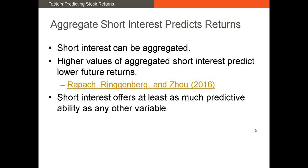There are two additional factors that have been found to predict returns. The first is aggregate short interest — the number of shares shorted by investors, often scaled by shares outstanding to create a short interest ratio. If a lot of investors are shorting securities, this indicates they believe the value of those assets is likely to decline. The aggregate short interest ratio has been found by Rappach, Ringgenberg, and Zhou to be negatively correlated with future returns — if short interest increases, actual future returns are likely to decrease.